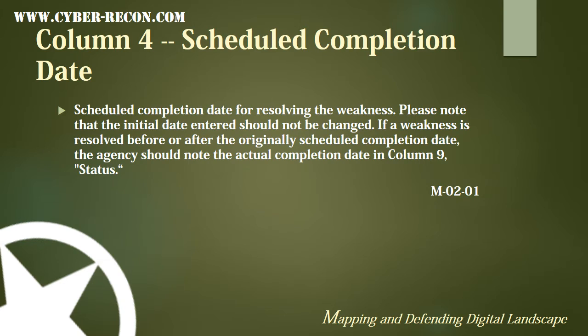Column 4 is the scheduled completion date — the scheduled completion date for resolving the weakness. Please note that the initial date entered should not be changed. If a weakness is resolved before or after the originally scheduled completion date, the agency should note the actual completion date in column 9, which is status. As noted earlier, this was not called out as one of the locked columns in OMB M-02-01, but in this instruction it's indicated that this should not be changed once entered.